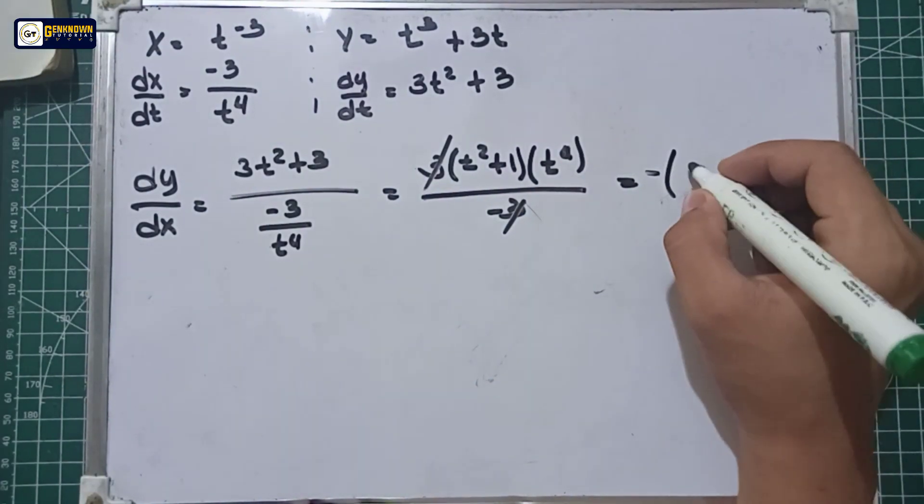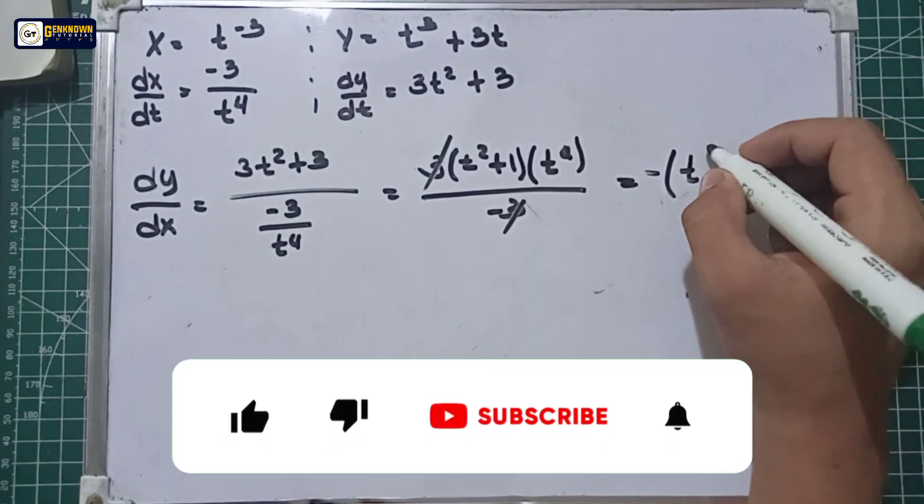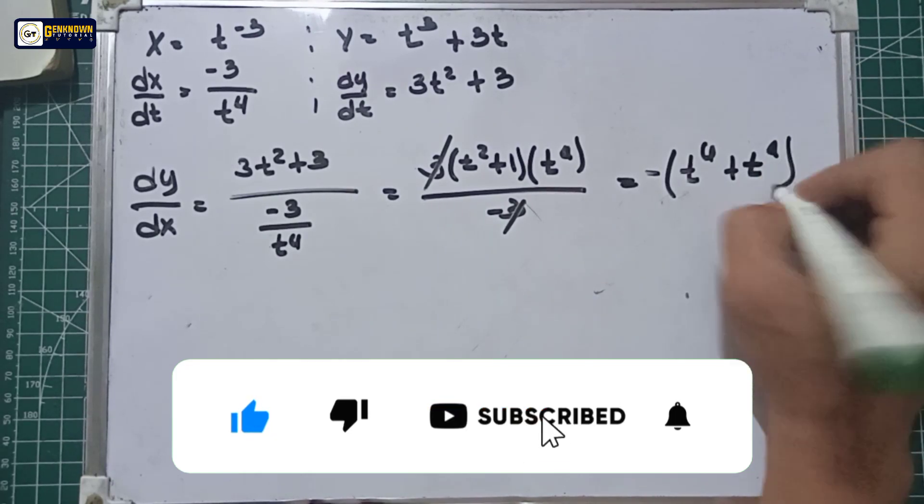This gives us the first derivative as negative quantity of t raised to the 6th plus t to the fourth power.